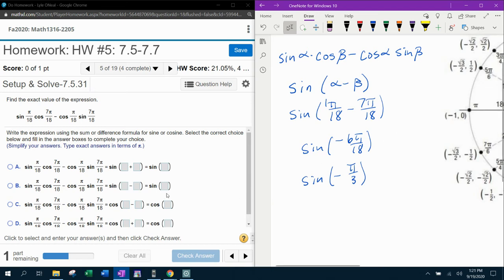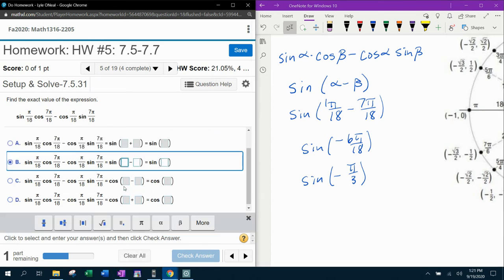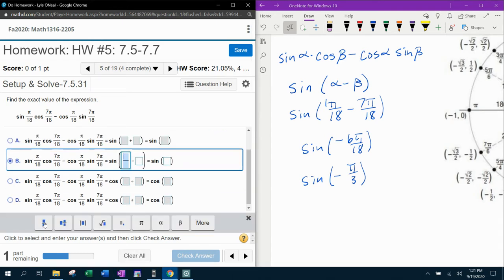So I'm pretty sure that they're going to want us to fill that in with a negative pi over 3. So now I have to pick which one of these is correct. Notice the formula was sine of alpha minus beta. That's going to be answer choice B. And the alpha was pi over 18 and the beta was 7 pi over 18. And the outcome was negative pi over 3.